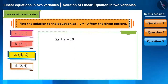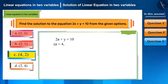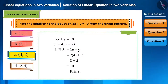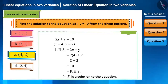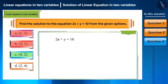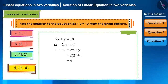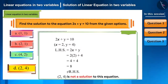Now, let's take the third option. The value of x is 4 and y is 2. Substituting this in the equation, the RHS is equal to the LHS. Therefore, (4, 2) is a solution to this equation. Let's also check the last option, (2, 4). Substituting it in the equation, we get 8. Therefore, this is not a solution to this equation.